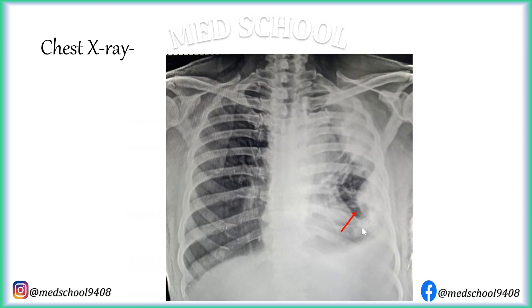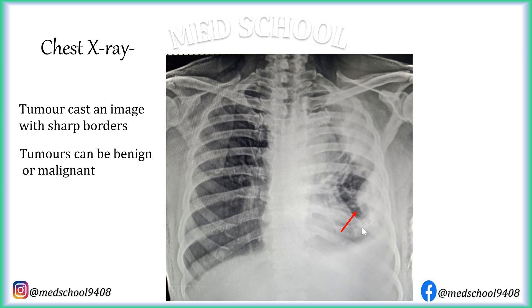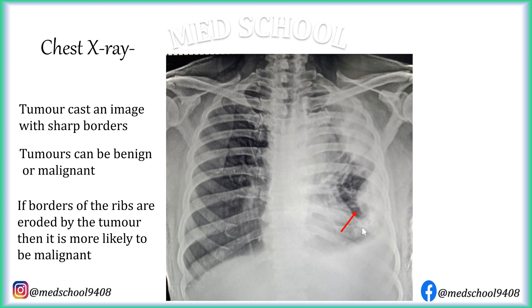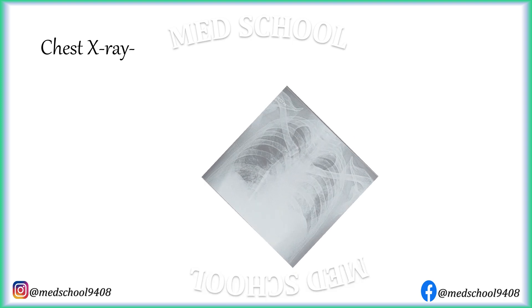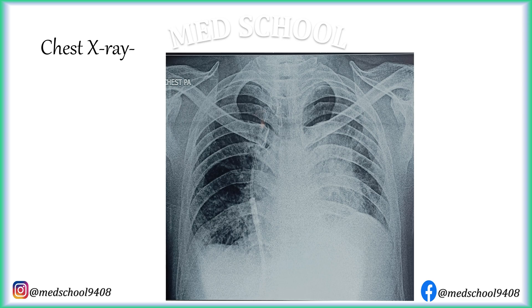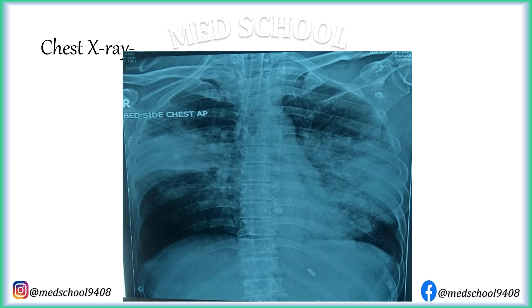Tumours cast an image with very sharp borders, and can be benign or malignant. If borders of the ribs are eroded by the tumour, then it is more likely to be malignant. This chest x-ray belongs to a known case of CLL. Even if this consolidation is not densely radiopaque, its border is very sharp. Coming back to this x-ray, the lower border of this lesion appears very sharp — if this is definitely a case of pneumonia, why does this border look so sharp? If you know the answer, please write it down in the comment section.